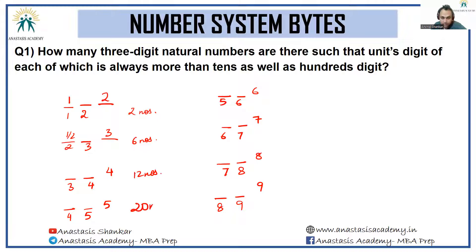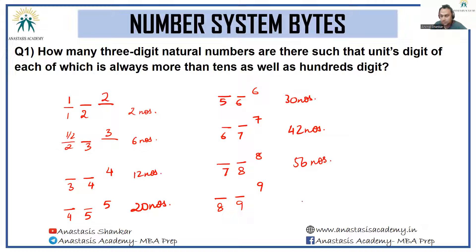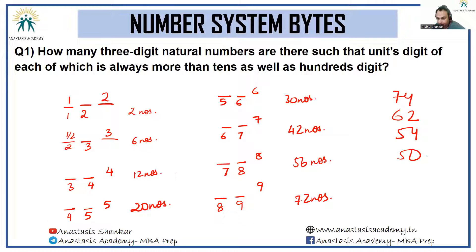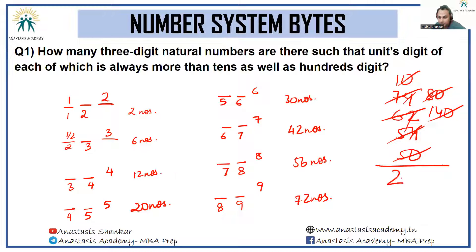Listing all cases: 2, 6, 12, 20, 30 — and each of these products are the sum of the first n natural numbers times two — giving 42, 56, and 72. Summing: 72+2=74, 56+6=62, 42+12=54, 30+20=50, giving 10+70=80, 80+60=140, 140+50+50=240.